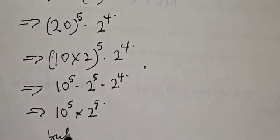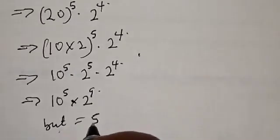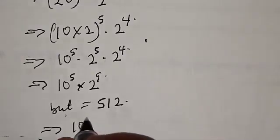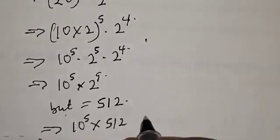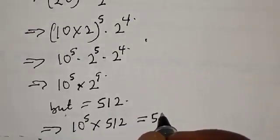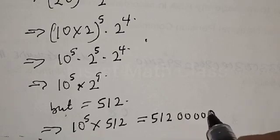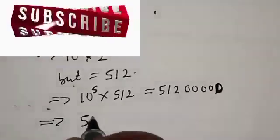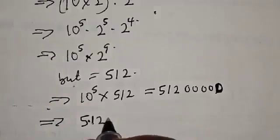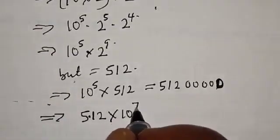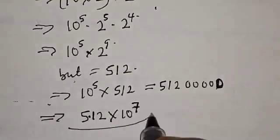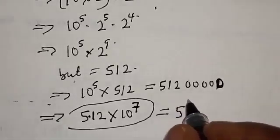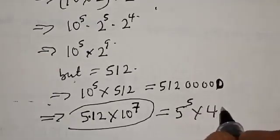Now, 2 raised to the power 9 is equal to 512. So this implies that we have 10 raised to the power 5 multiplied by 512, which equals 512 followed by 5 zeros. Our final answer is 5.12 times 10 raised to the power 7. That is the value of 5 raised to the power 5 multiplied by 4 raised to the power 7.